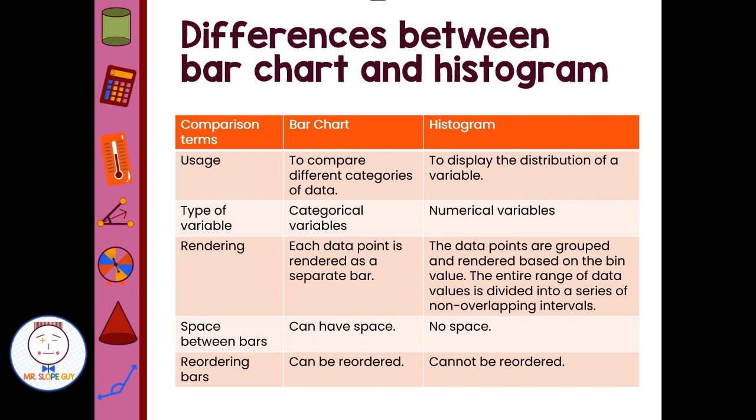The rendering or the drawings for each. For a bar chart, each data point is rendered as a separate bar. And a histogram, the data points or groups are rendered based on the bin value. The entire range of data value is divided up into a series of non-overlapping intervals.